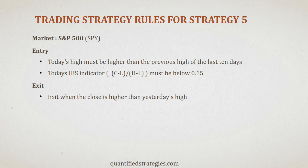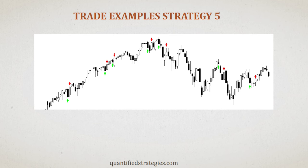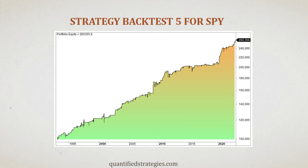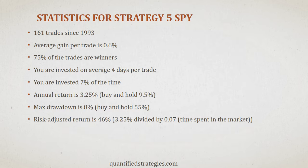Of seven trade examples, five turn out to be profitable. We buy on a weekday when SPY closes in the bottom of its daily range, but it still managed to set a new 10-day high earlier in the session. The equity curve shows an upward slope with only 161 trades and an average gain of 0.6% per trade. The annual return was 3.24%, which is due to being invested only 7% of the time. However, the strategy has the lowest drawdown at just 8%.